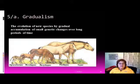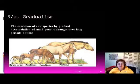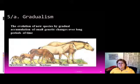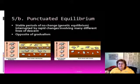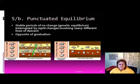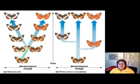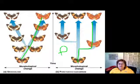The next concept is gradualism — the evolution of new species by gradual accumulation of small genetic changes over long periods of time. The opposite is punctuated equilibrium, which is when you have stable periods with no changes and then sudden changes. This slide shows the gradual changes of gradualism, and this shows punctuated equilibrium.